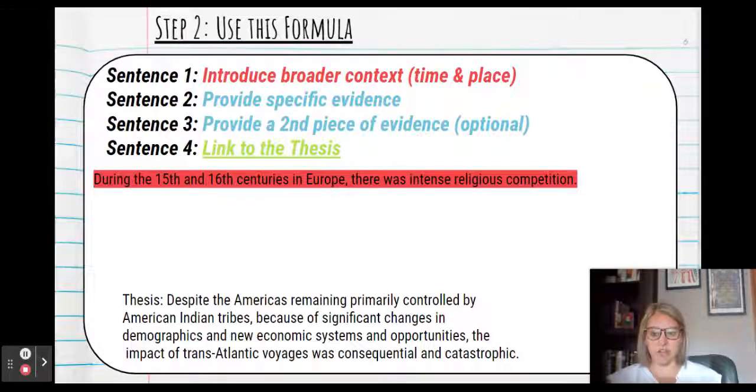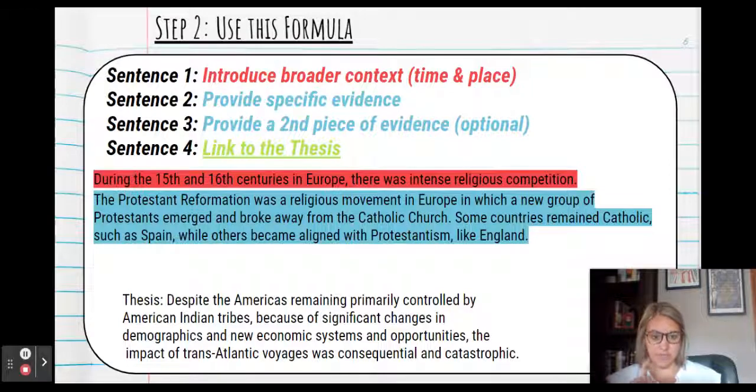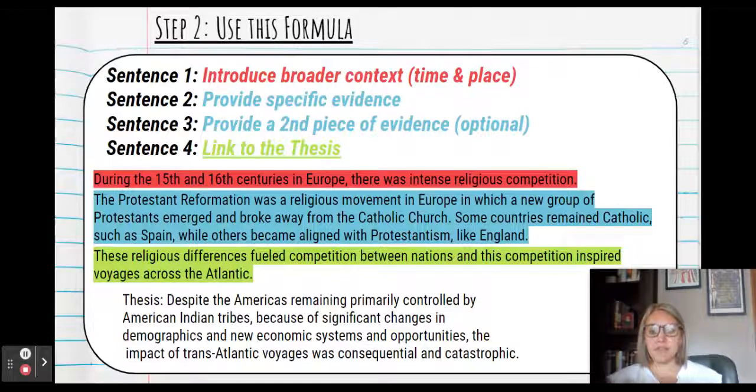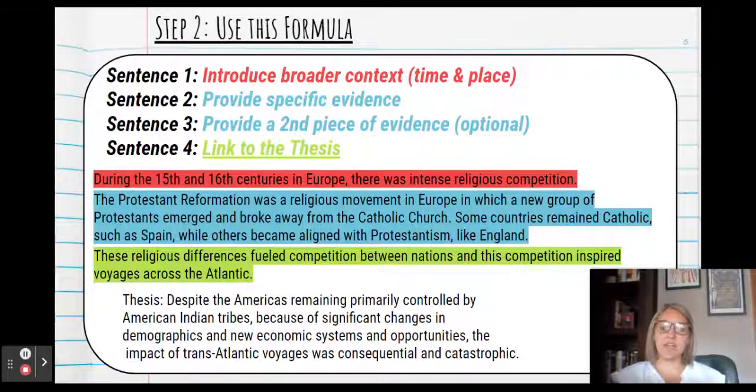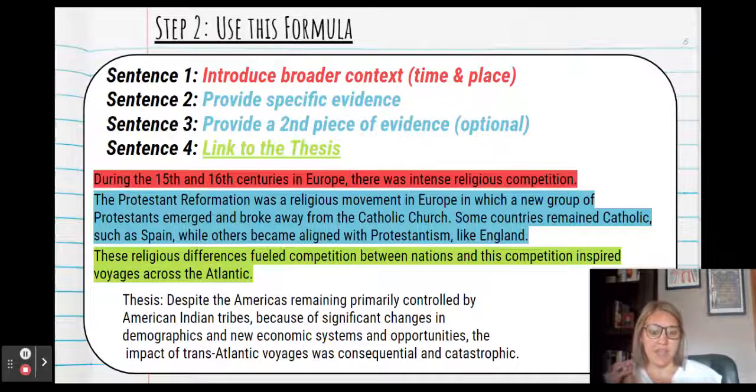So here's how I introduce the broader context. During the 15th and 16th centuries in Europe, there was intense religious competition. Do I have time and place? Yep. Have I introduced the broader context, religious competition? There it is. Now I'm going to give specific evidence. The Protestant Reformation was a religious movement in Europe in which a new group of Protestants emerged and broke away from the Catholic Church. Some countries remained Catholic, such as Spain, while others became aligned with Protestantism like England. All right, so I've got specific evidence in there related to my broader context of religious competition. Now I have to link to the thesis. These religious differences fueled competition between nations and this competition inspired voyages across the Atlantic. So then it flows very easily into the focus of the prompt, which is the effects of transatlantic voyages.